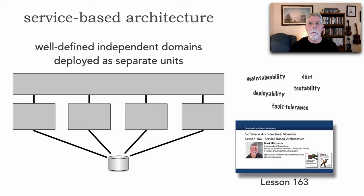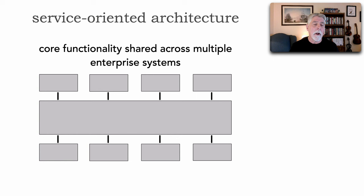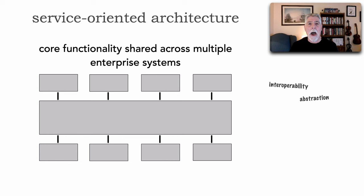Moving on, we get to service-oriented architecture — an older style that has fallen off the trend bandwagon in the past decade, though it's still a viable architecture style. The shape of SOA is core functionality shared across multiple enterprise systems, all linked through a central enterprise service bus. Two other shape contributors are high levels of abstraction and interoperability — connecting heterogeneous systems together in a single request. More information is in lesson 164.